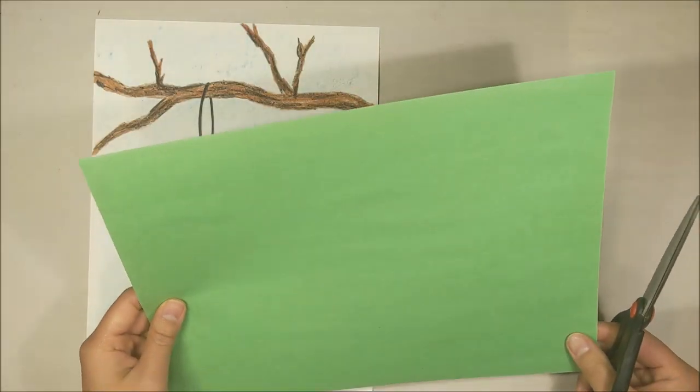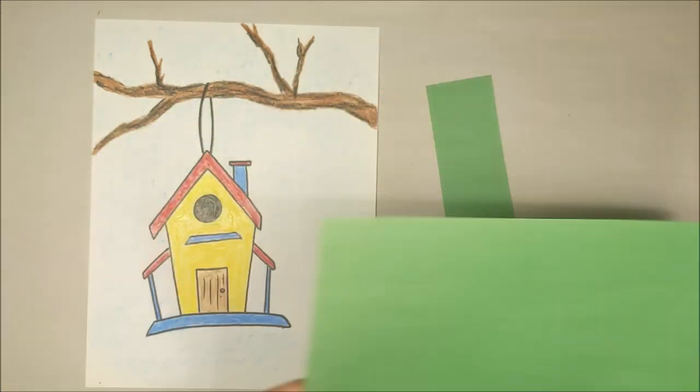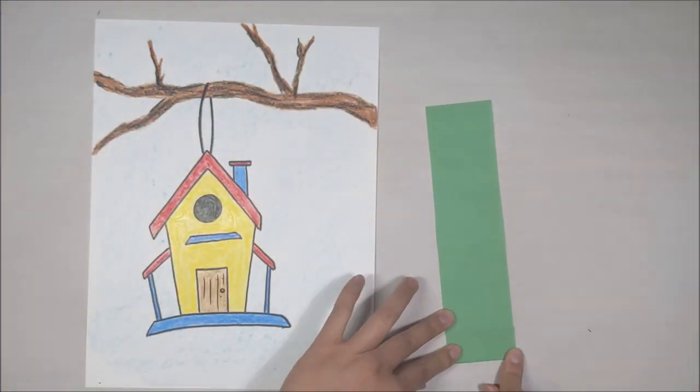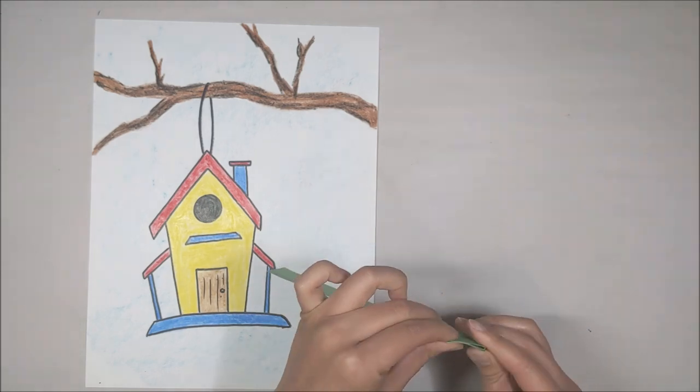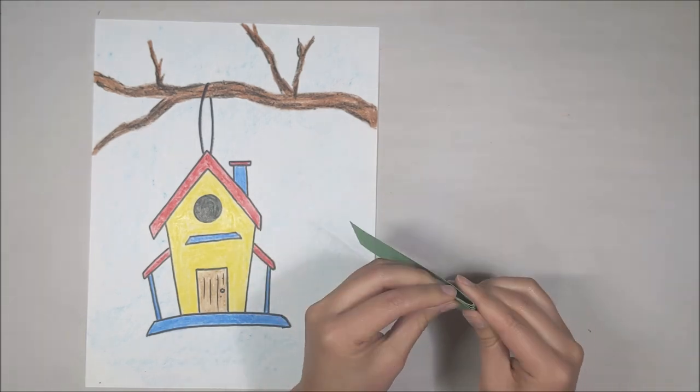To create the leaves, you need strips of green construction paper. Taking the green strip, you want to fold it in a zigzag fashion, going back and forth.